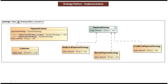This is the class diagram of the scenario we just discussed. On the top right, you can see a PaymentStrategy interface with an abstract method pay() that accepts amount as a string. This interface is implemented by three concrete classes: DebitCardPaymentStrategy, ByCashPaymentStrategy, and CreditCardPaymentStrategy, because the customer can pay using three different strategies.